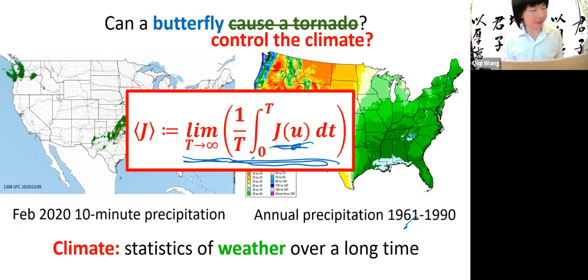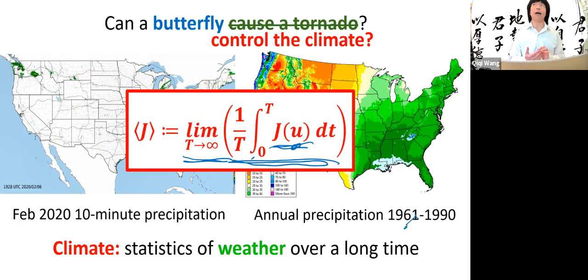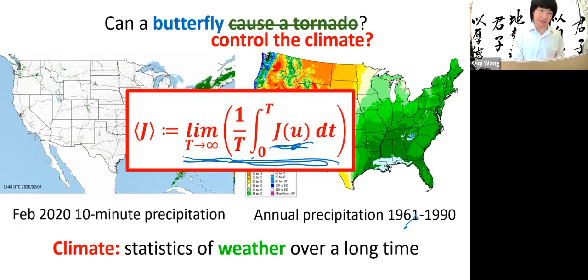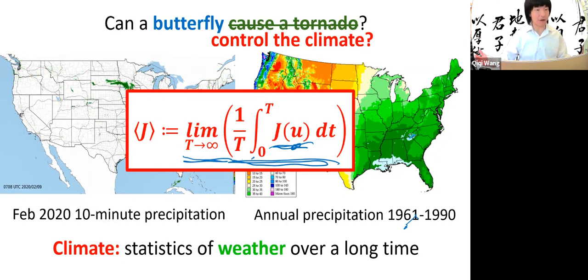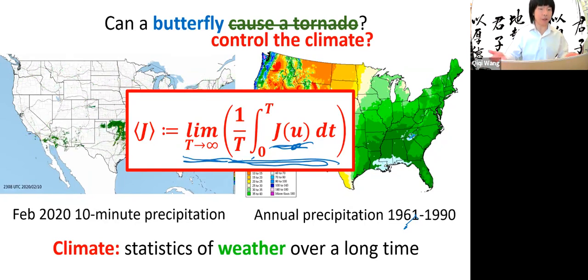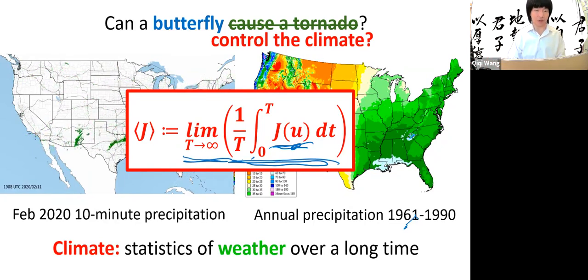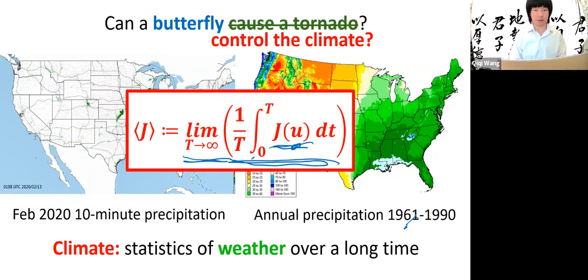Let's put it in mathematics. Climate is defined as: you take the state of the dynamical system u, and a certain function of the state j(u) — for example, the precipitation at a certain location. You integrate it over time and divide it by the length of the integration — that's a time average. Then you take the length of the average to infinity. That's a rigorous definition of what I mean by climate or the statistic of a dynamical system.